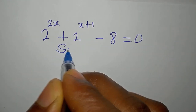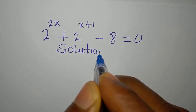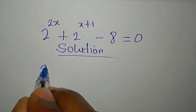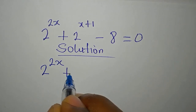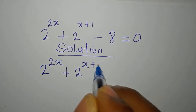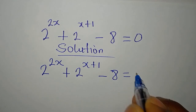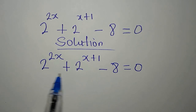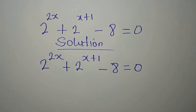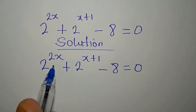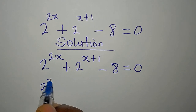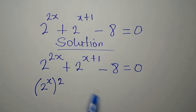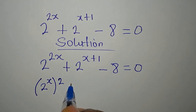Let's solve the equation 2^(2x) + 2^(x+1) - 8 = 0. We cannot add these two terms directly because the powers are not the same. However, we can rewrite 2^(2x) as (2^x)^2, so that opening the bracket gives us 2^(2x). Then we also have plus 2...